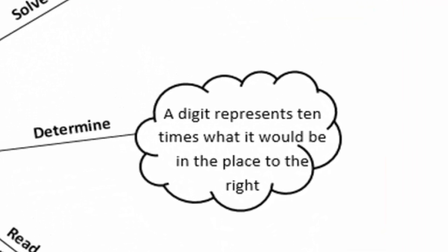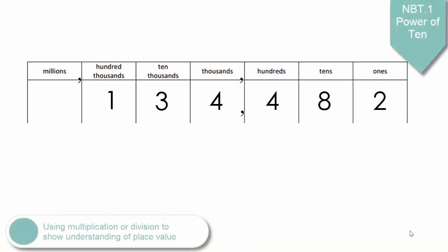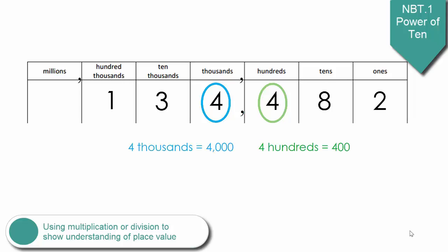We will begin by taking a closer look at recognizing and determining how a digit represents 10 times what it would be of the digit to the right. In 4th Grade, students work with whole numbers to the millions place. When explaining their understanding of the power of 10, students will have to analyze a number such as 134,482, and tell how the 4 in the hundreds place is related to the 4 in the thousands place. Students should be able to explain that the 4 in the hundreds place has a value of 400 and that the 4 in the thousands place has a value of 4000, which is 10 times greater than 400 because 400 times 10 is 4000. This can also be explained by saying that 4000 divided by 10 is 400.